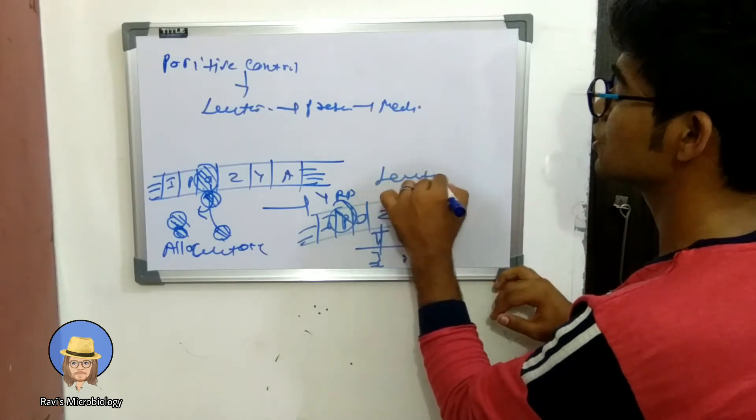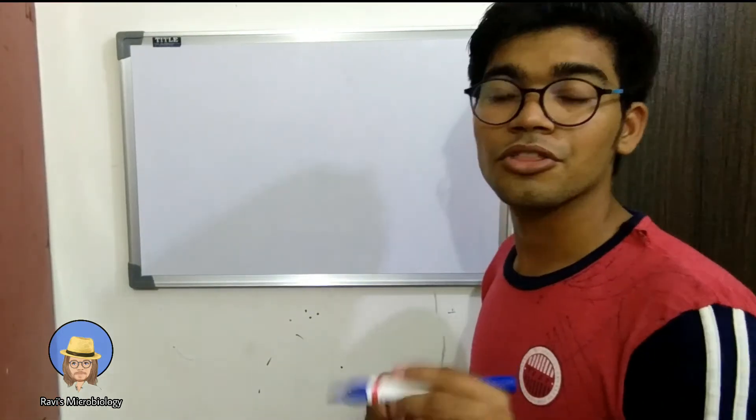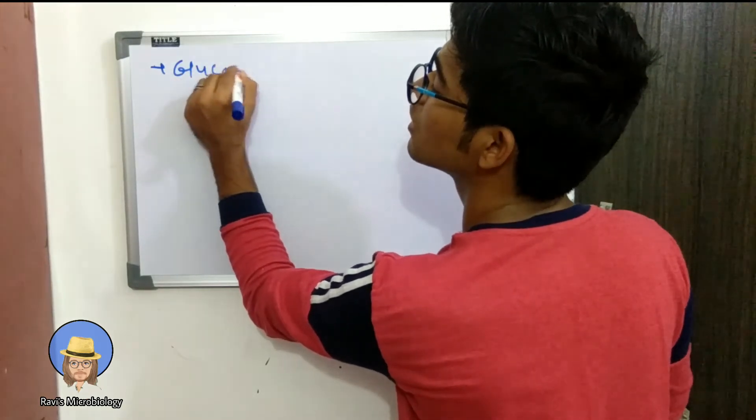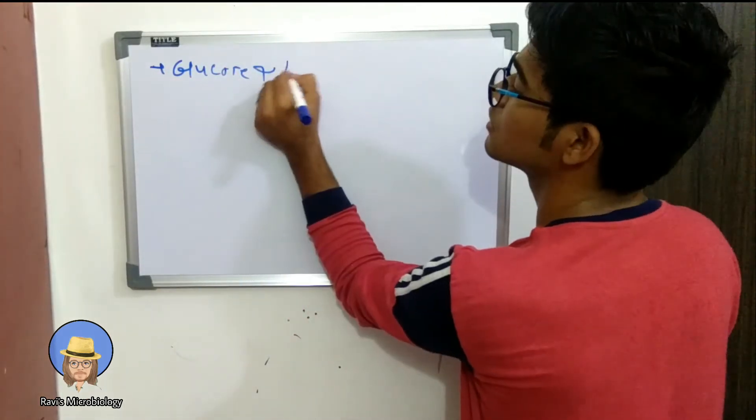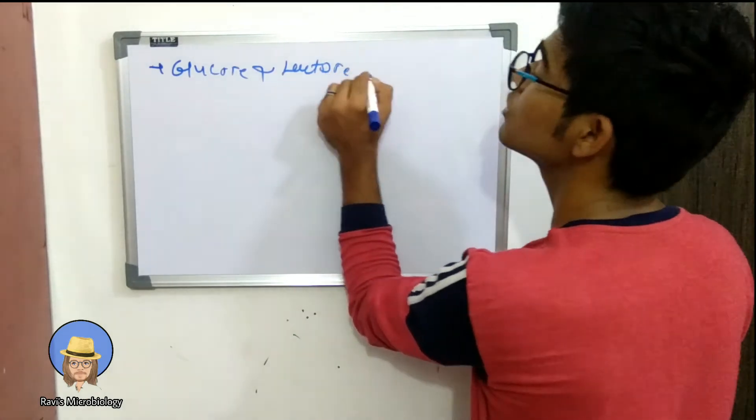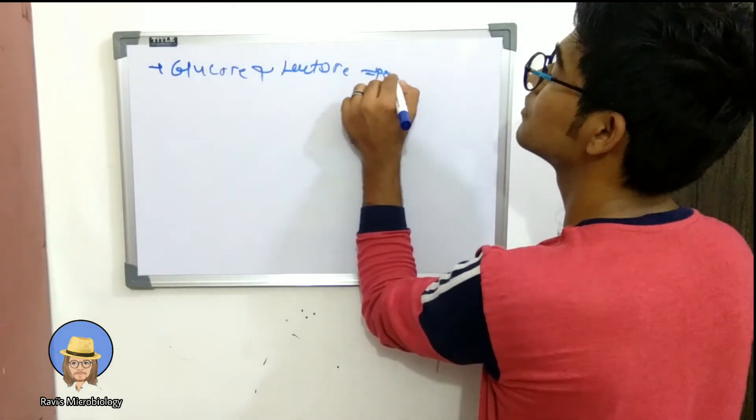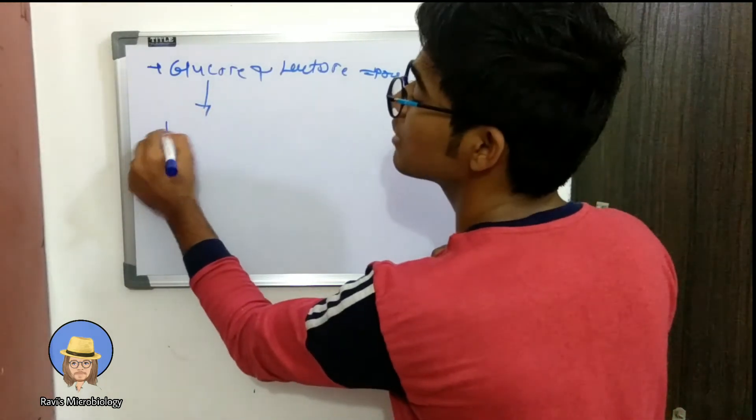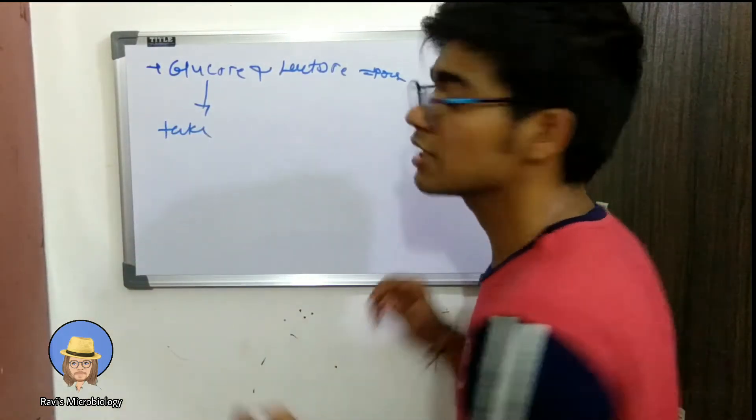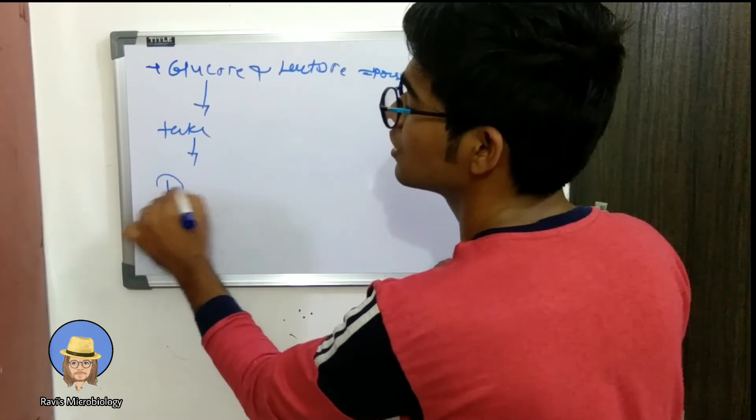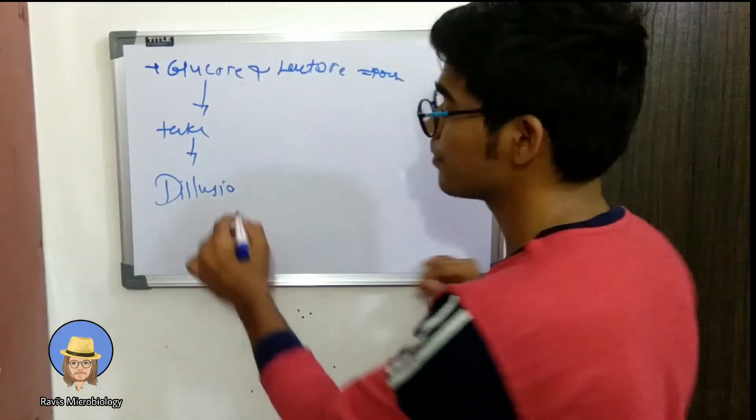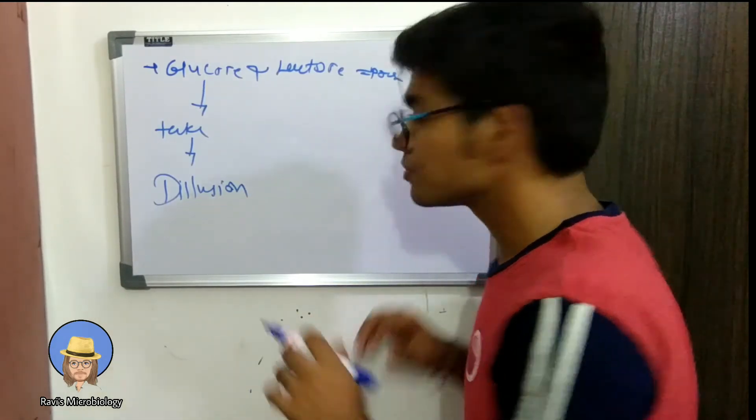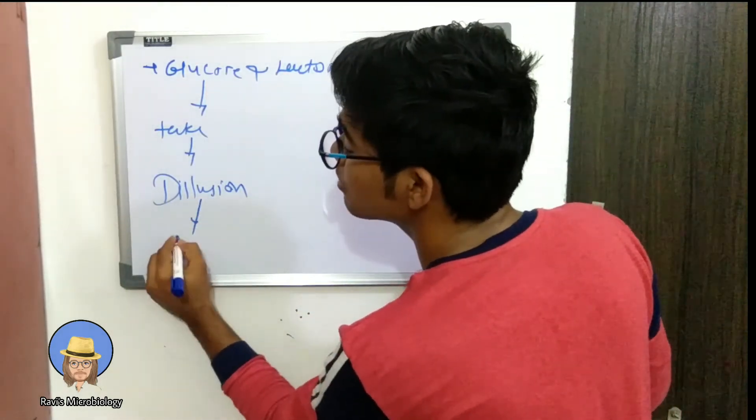The third condition is when glucose and lactose both are present in the medium. What happens? Glucose will be taken first because it is a monosaccharide and it will simply diffuse to take inside the cell and metabolize.